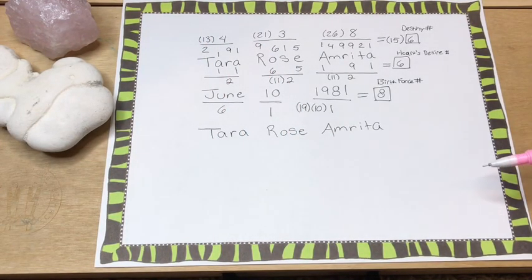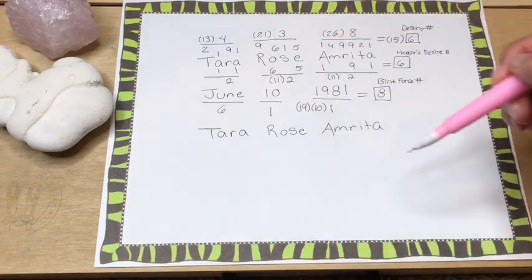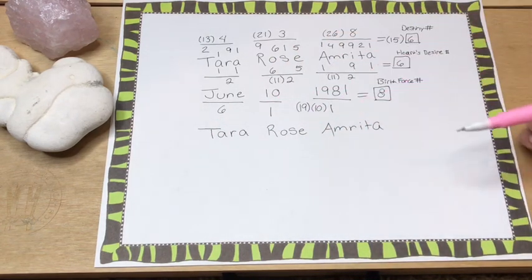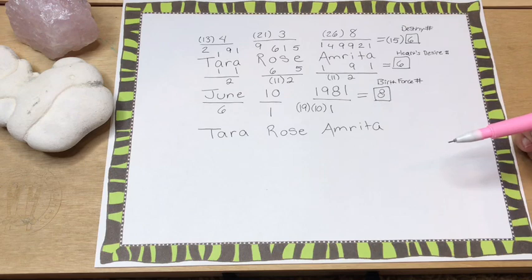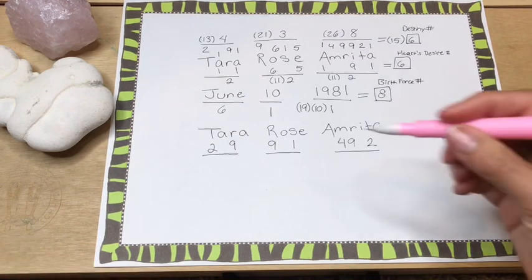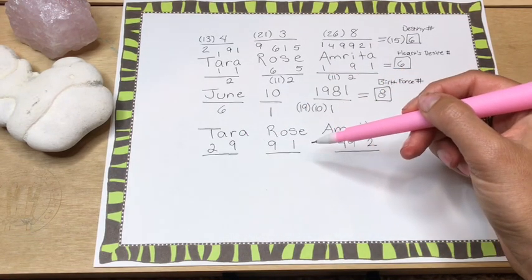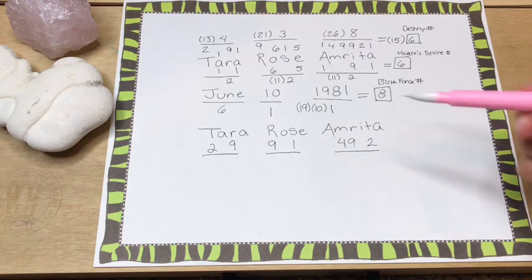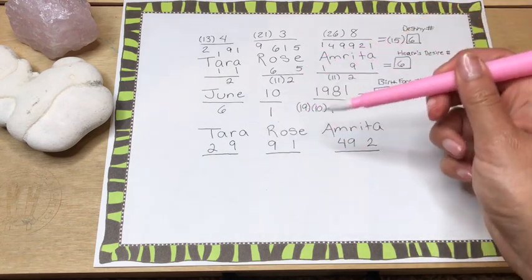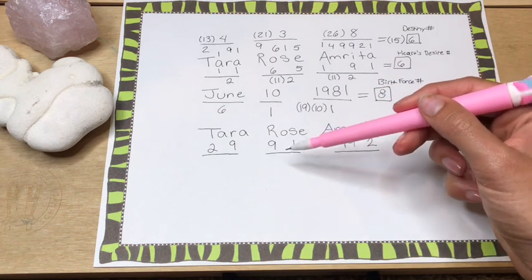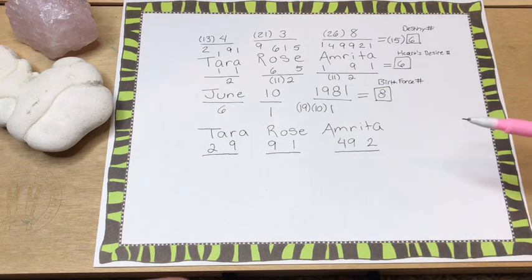I went over that in part one. So now I am just going to write down the number consonants in my name, and I will get back to you. Okay, so I have given a numerical value to the consonants in my name. So you have Tara, Rose, and Amrita is 2991492.